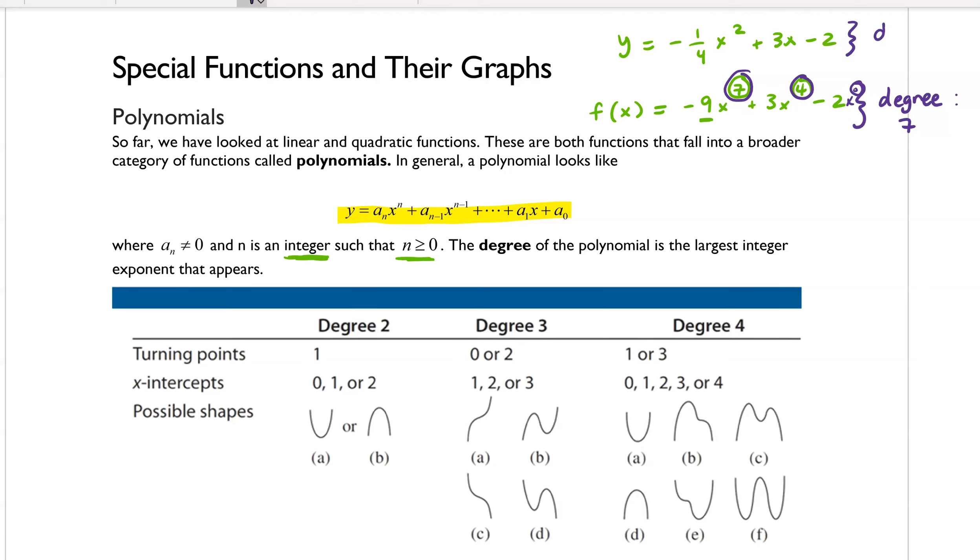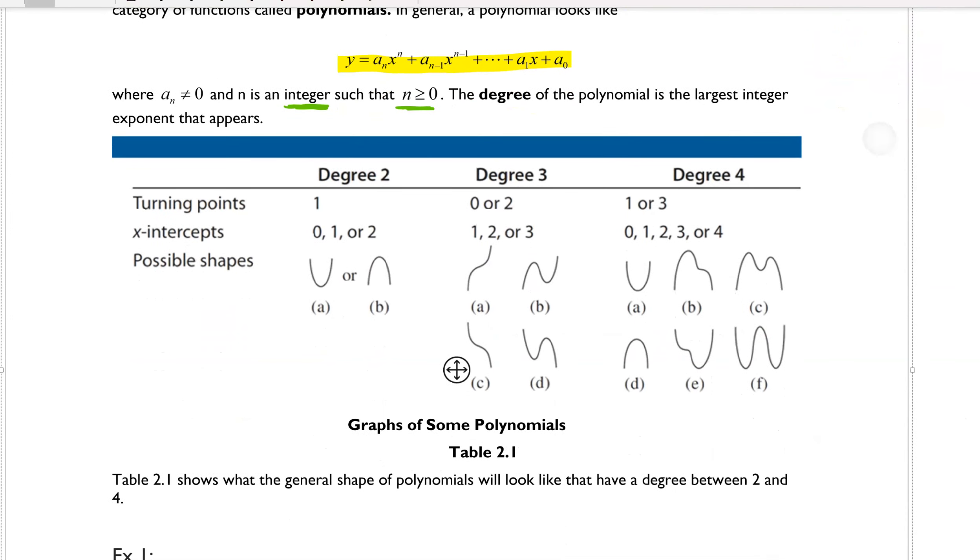For this example here, the degree is two. Let's come down and look at this table from your textbook. It's table 2.1, and this is just giving you examples for degree 2 polynomials, degree 3 polynomials, and degree 4 polynomials. Now let me give you the names of what we call each of these things. So a degree 2 polynomial is called a quadratic, a degree 3 polynomial is called a cubic, and a degree 4 polynomial is called a quartic.